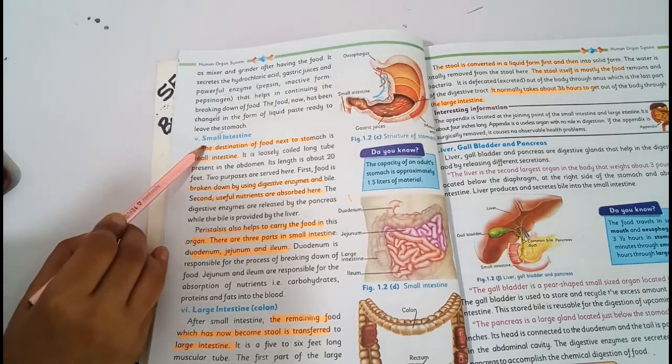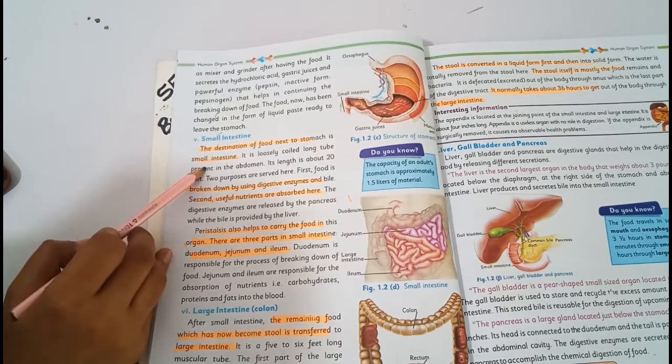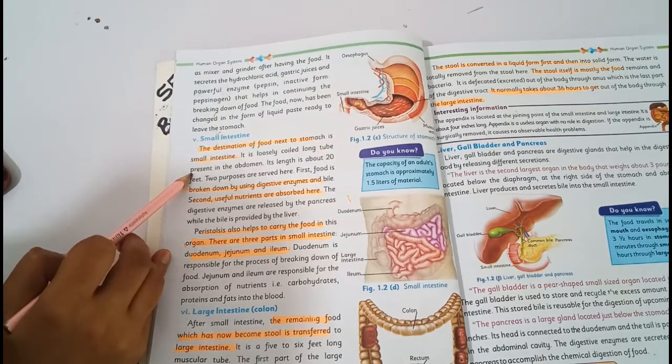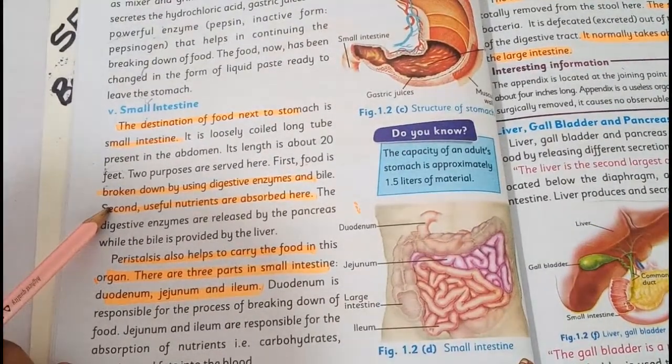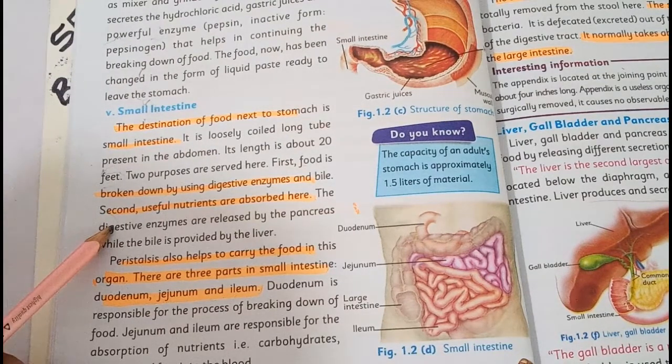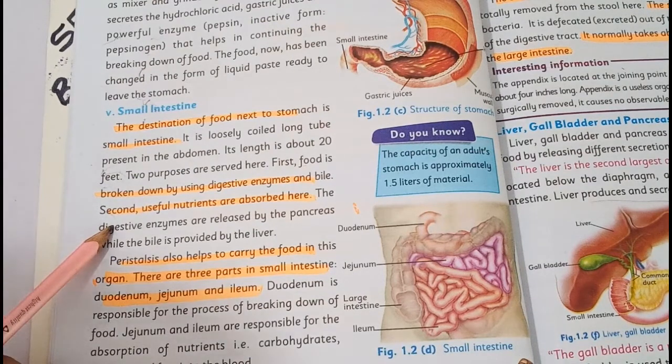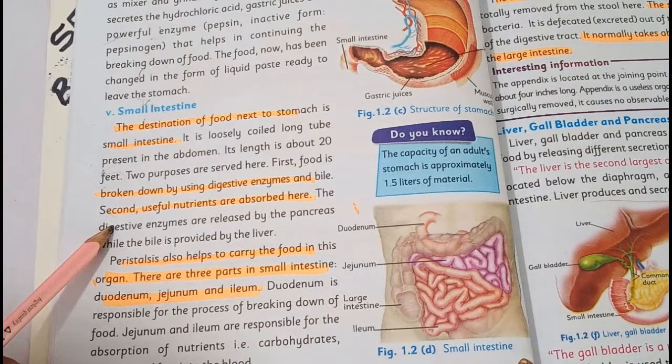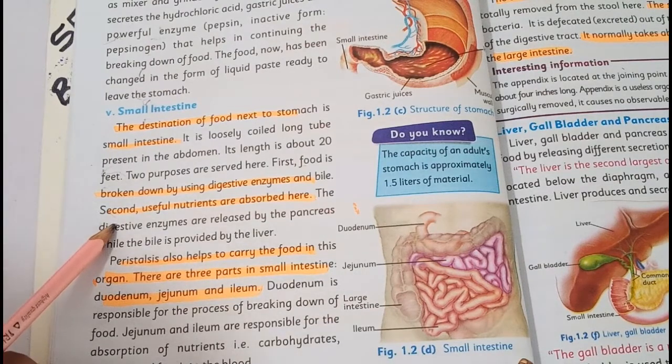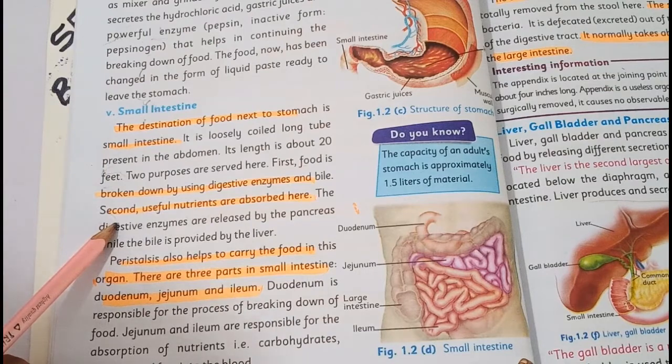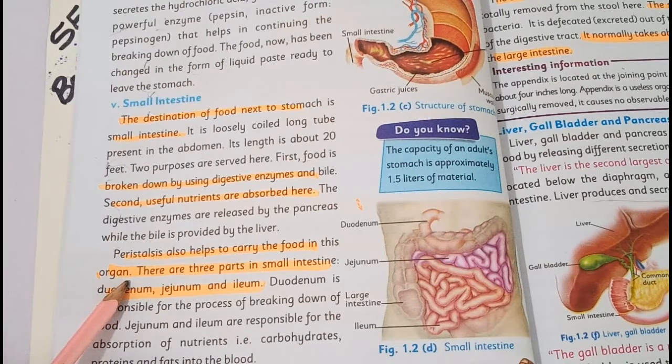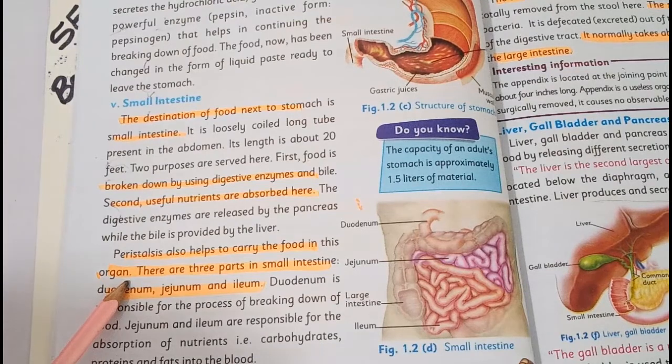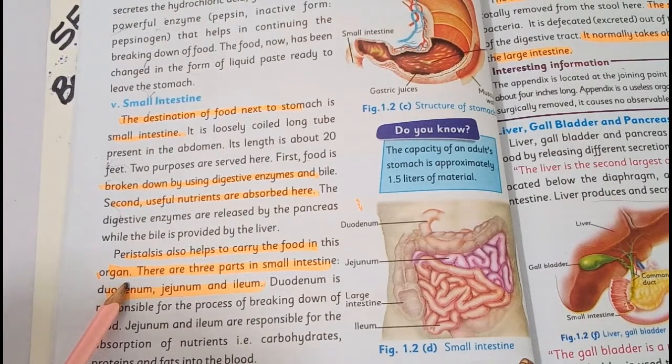The next destination of food is small intestine. It is a loosely coiled long tube present in the abdomen. Its length is about 20 feet. Two purposes are served here: first, food is broken down by using digestive enzymes; second, nutrients are absorbed into the blood. Peristalsis also helps to carry the food to the next organ.